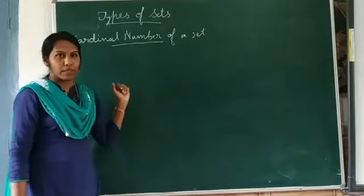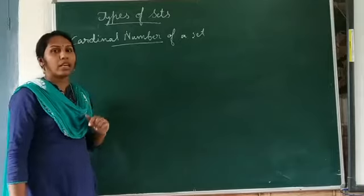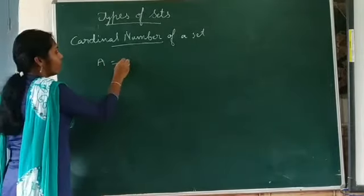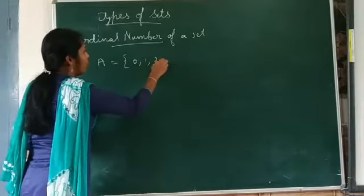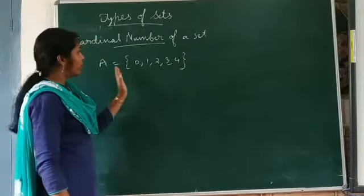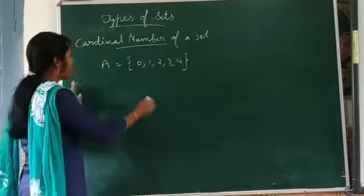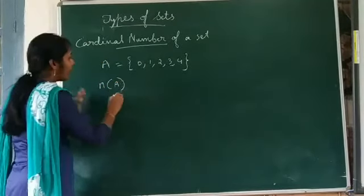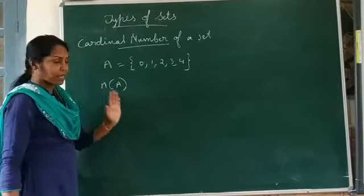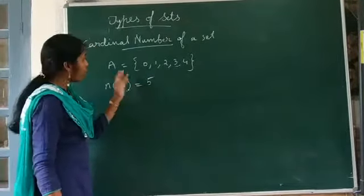Now, the cardinal number of a set. The number of distinct elements in a finite set is known as the cardinal number of that particular set. For example, A is equal to {0, 1, 2, 3, 4}. The distinct elements of this set are 0, 1, 2, 3, and 4 — they are 5. Therefore, we can say the cardinal number is denoted by n(A), n(B), etc. Here, n(A) is equal to 5. This is the cardinal number of set A.